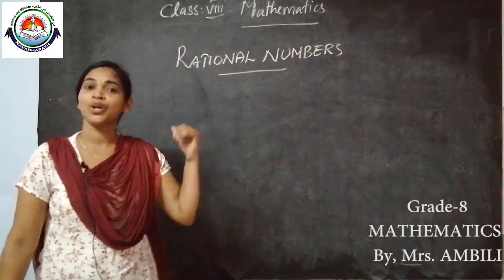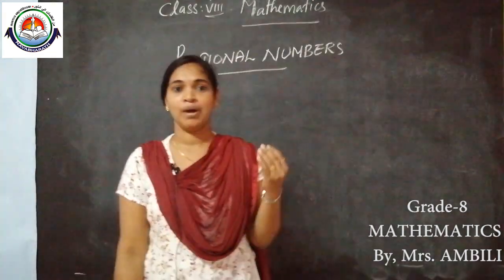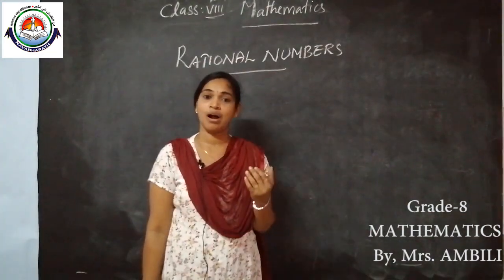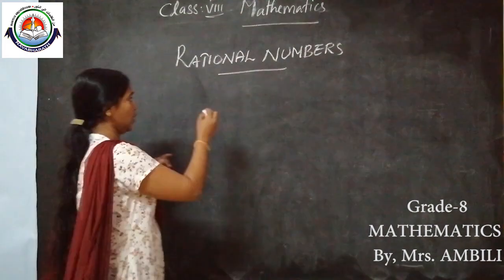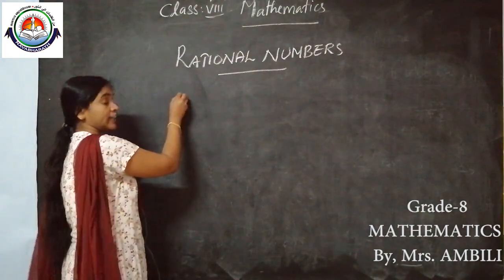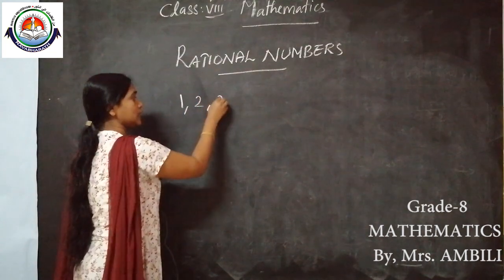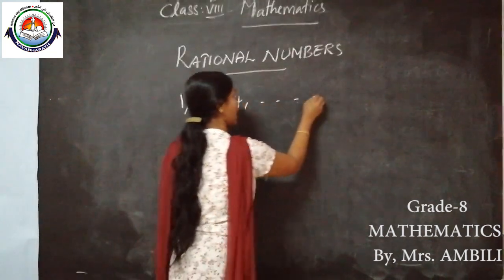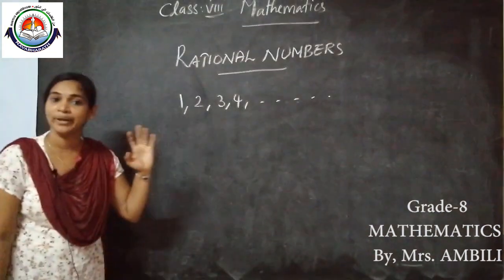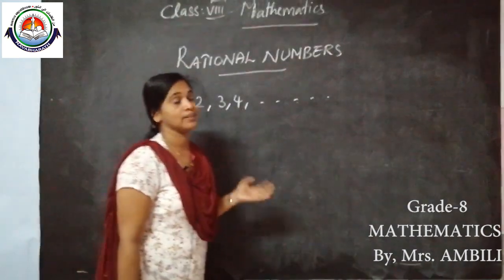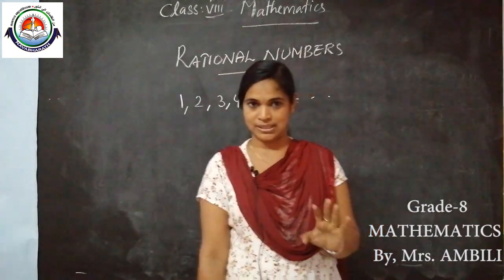Before going to this chapter, you want to know about counting numbers. Which numbers are we using for counting? We know that we start from 1, 2, 3, 4, etc. These are known as counting numbers, and they are also known as natural numbers.